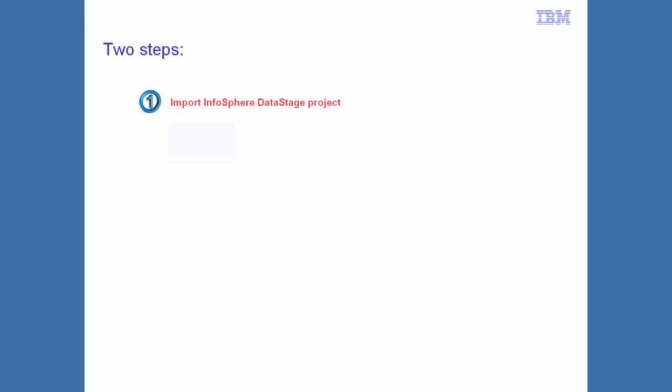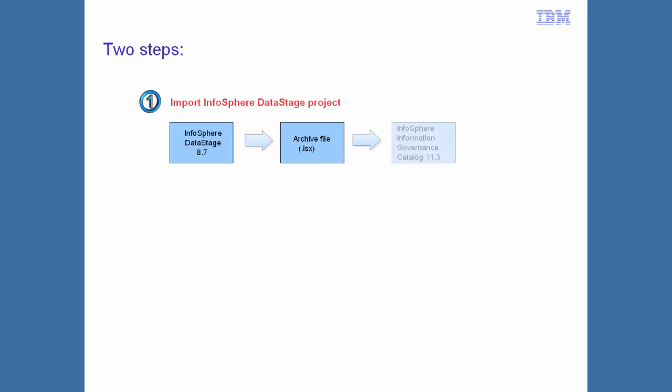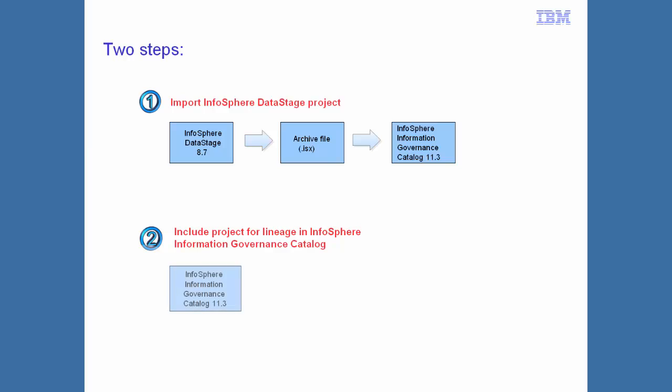Two simple steps are needed to get lineage up and running. First, we import the Infosphere Data Stage transformation project from an archive of an earlier version — in our case, from a project in Infosphere Data Stage 8.7. And second, within Infosphere Information Governance Catalog, we set the jobs in the transformation project to be included for lineage.